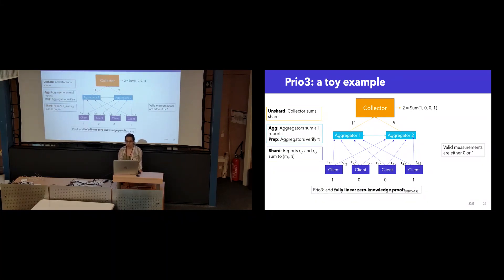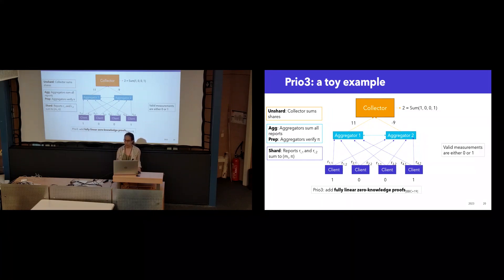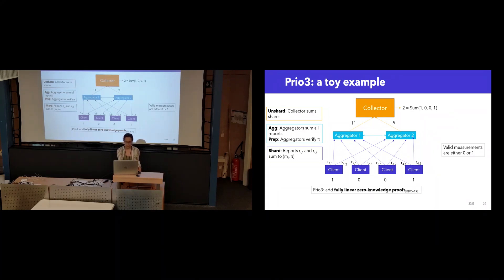So PRIO3 adds fully linear zero-knowledge proofs, which is just, in this case, a range proof for the client measurement, but the proof is able to be also linearly secret shared between the two aggregators, and then the aggregators can communicate in order to verify the validity of their proof shares. And this is actually quite efficient.